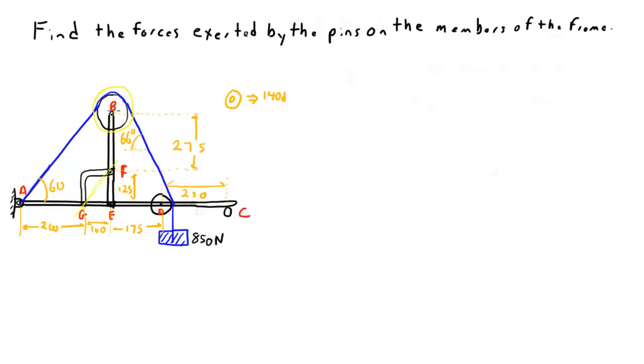There are also pulleys attached at point B and point D. And then there's a rope that's attached at point A. It goes over the pulley at B, over the pulley at D, and supports an 850-Newton load.